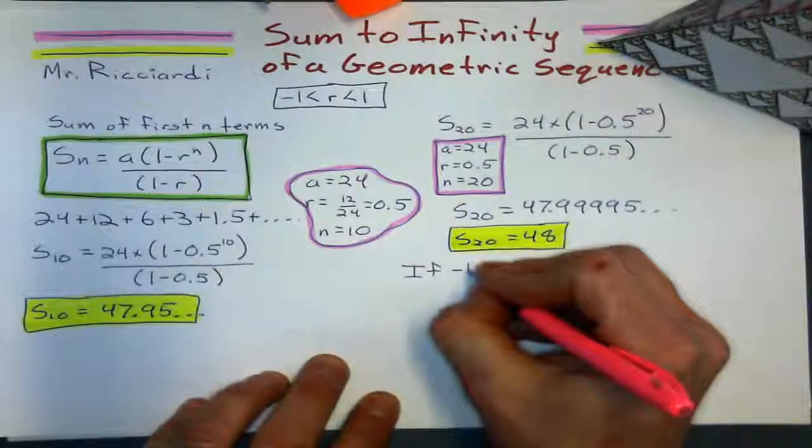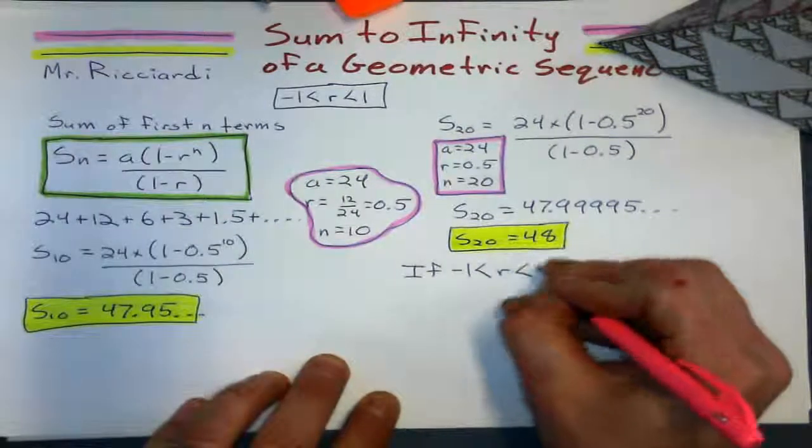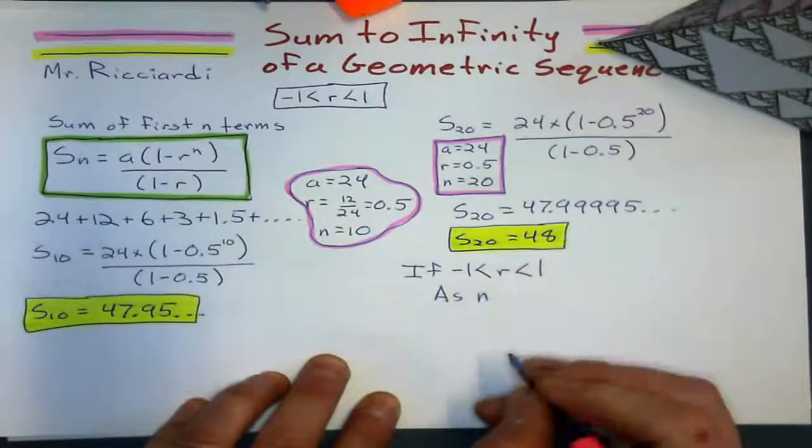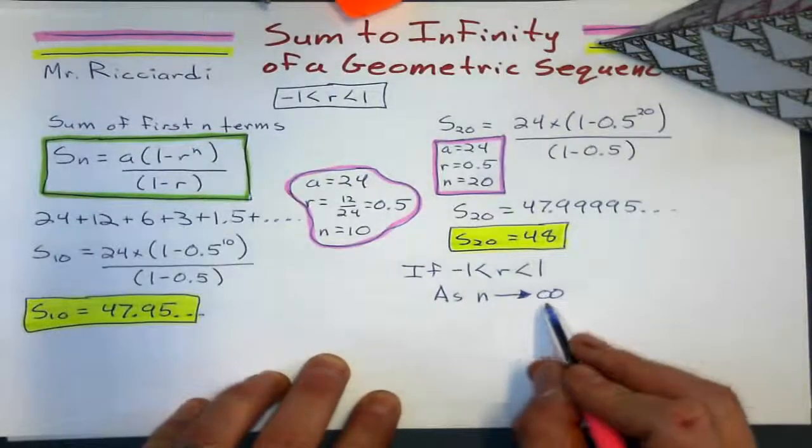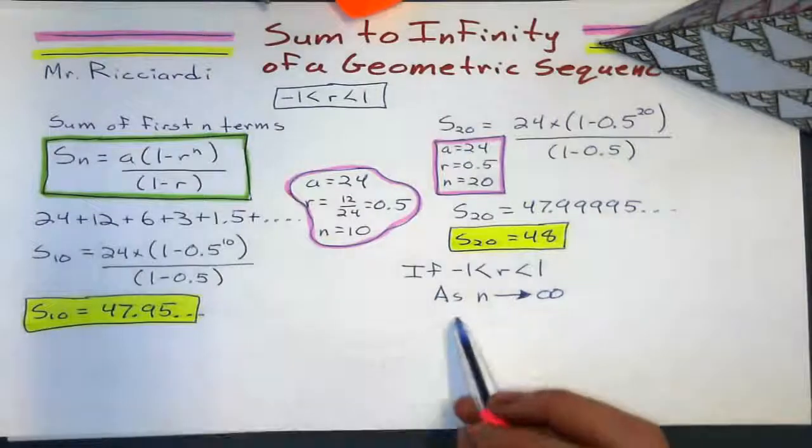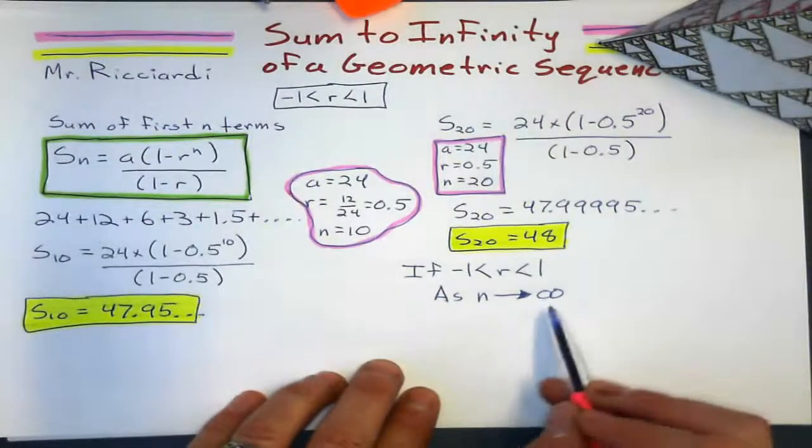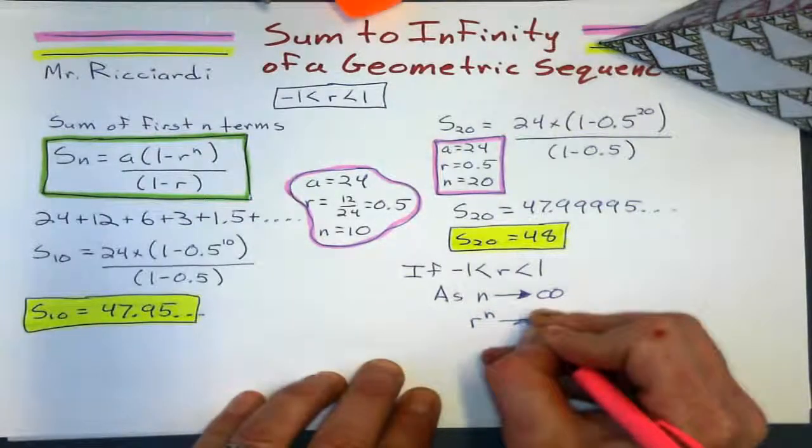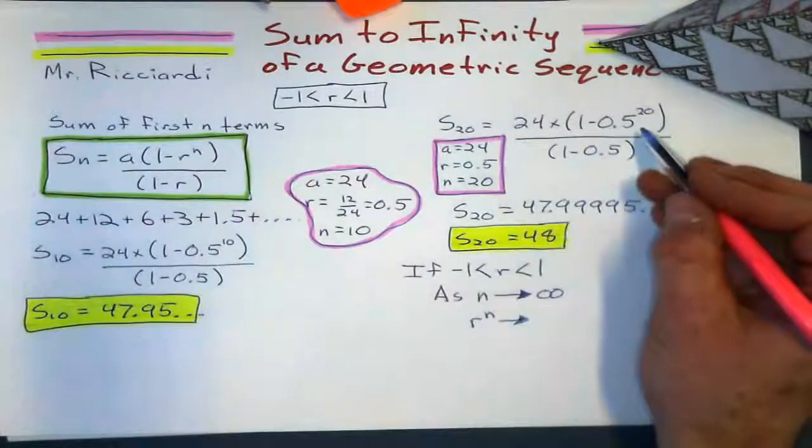So if, I'm going to write this down. If my common ratio is between negative 1 and 1, as N, I'm going to say approaches infinity. As N gets really big, so that's what that arrow means. Not equals, because infinity is not a number. But as N approaches infinity, as N gets bigger, what's going to happen to this thing, R to the N, is this is going to approach 0.